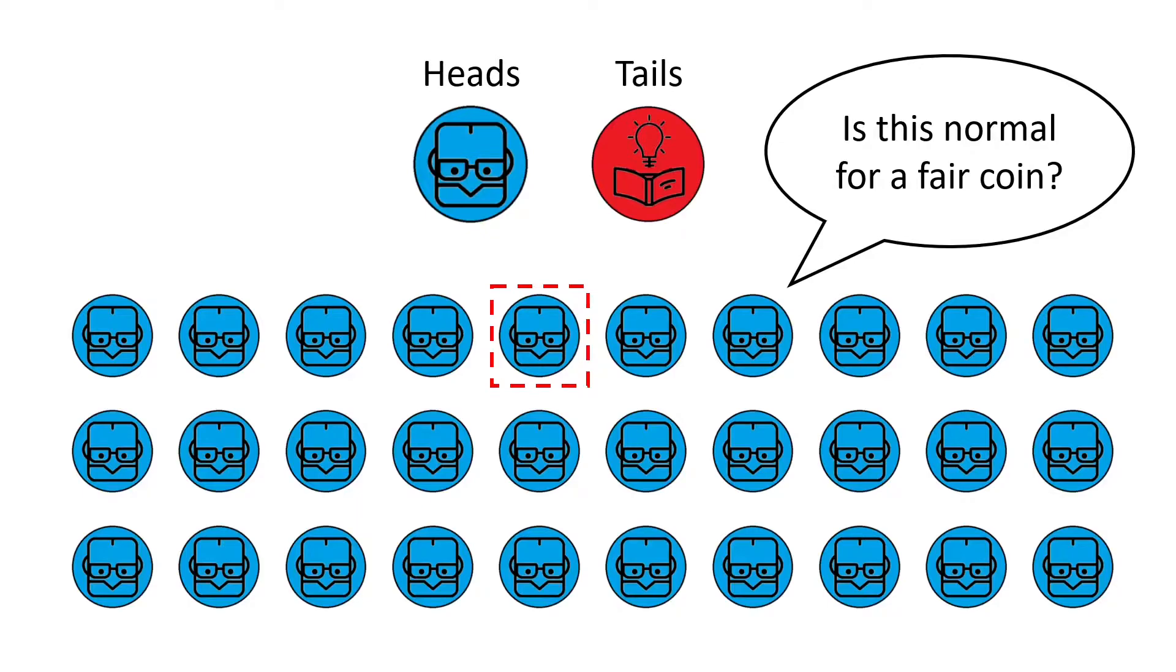Well, p-values help us to solve exactly these kinds of problems where you observe some data and you wonder if it aligns with our hypothesis. And for our coin tossing problem, it could tell us after how many heads our results became statistically significant.